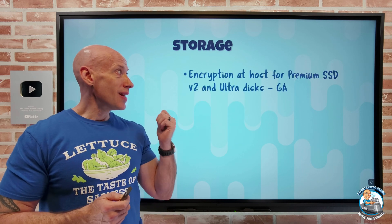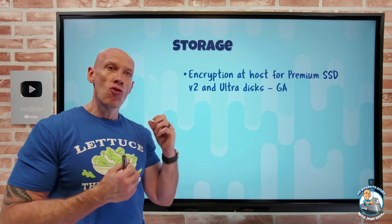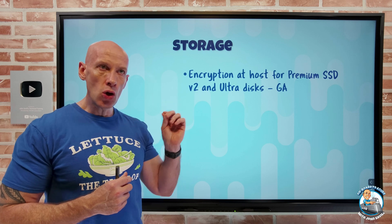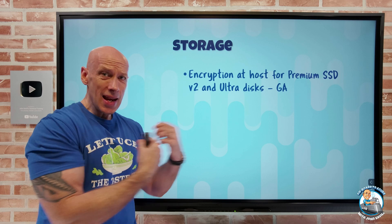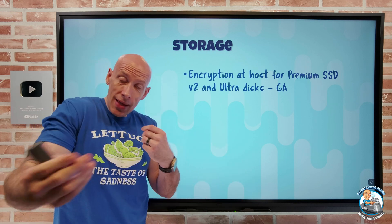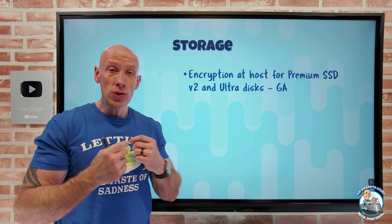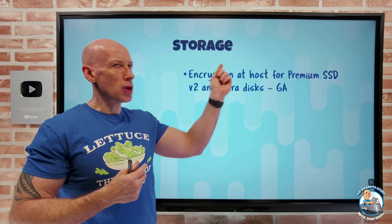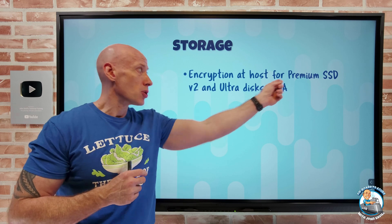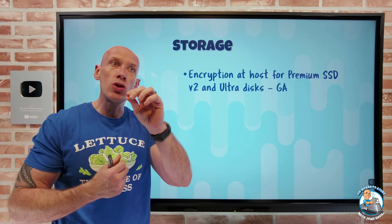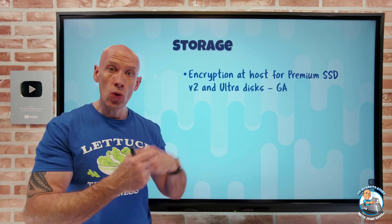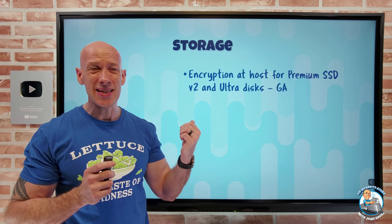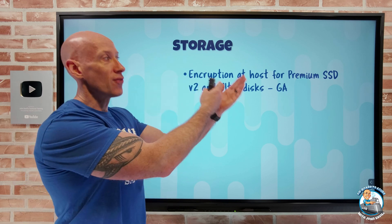On the storage side, encryption at host is now available for premium SSD V2s — the ones with lower latency and separately configurable IOPS and throughput — and for ultra disks. Encryption at host means that while disks are already encrypted at rest in backend storage, the cache file on the host and the communication between the abstracted storage account and the host are also encrypted. When enabled, it uses whatever key is used to encrypt the source disk — customer managed or platform managed — to encrypt the cache and in-transit data. This was already available for standard SSD, standard HDD, and premium SSD, and is now extended to V2 and ultra.